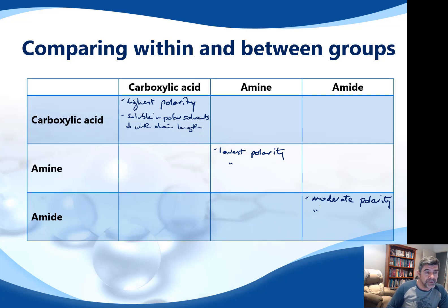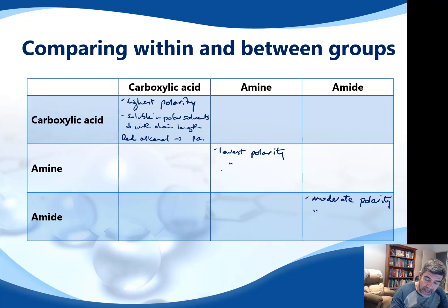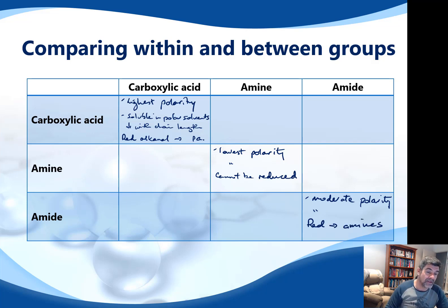In terms of chemical properties, for the carboxylic acids they can be reduced to an aldehyde or an alcohol, and perhaps even further to a primary alcohol. The amines cannot be reduced, but the amides can also be reduced to form amines — removing the oxygen leaves us with an amine group. So there are a couple of important reactive properties for each of these individual groups, and also something around their polarity.